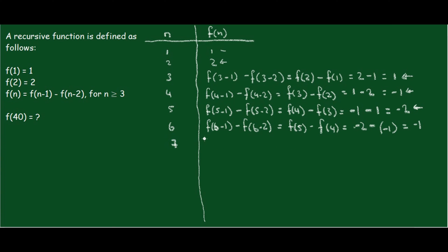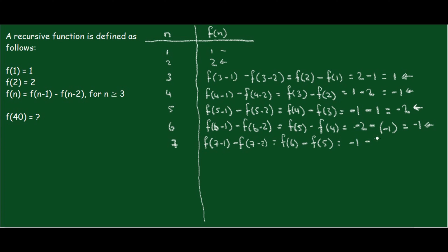Let's try f(7). That would be f(7-1) minus f(7-2), so f(6) minus f(5), which is negative 1 minus negative 2. So that's negative 1 plus 2, which gives us 1. So f(7) = 1.